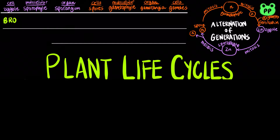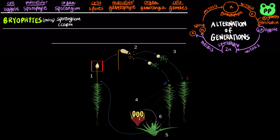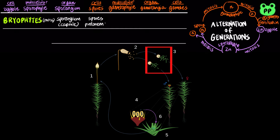Bryophytes are non-vascular plants that are gametophyte dominant. In the life cycle of a moss, the zygote develops into a multicellular sporophyte, which contains an organ called sporangium. The sporangium of a moss is also known as the capsule, and it releases spores through the opening called the peristome.